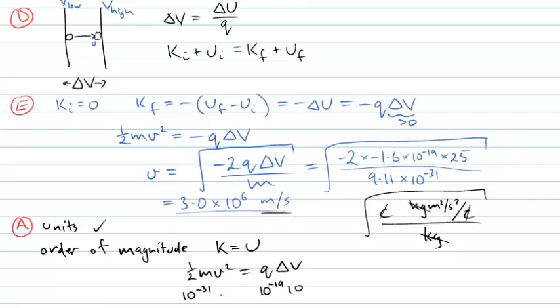Which means v should be something on the order of 10 to the 6 and again that checks out quite nicely. Quite a high speed that's because although our electron has a very small charge it has an even smaller mass in the units that we're using here.